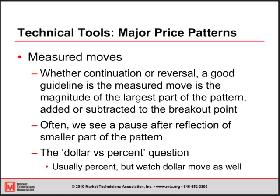Measured moves — whether it's a continuation pattern or a reversal pattern, one good guideline is that the measured move is about the magnitude of the largest part of the pattern, added or subtracted to the breakout point. We'll often see a pause after a reflection of a smaller part of the pattern. For example, in a head and shoulders, sometimes we'll see the first move down being just the magnitude of one of the shoulders, then a retracement, and then the rest of that move reflecting the entire magnitude of the head or the larger pattern.